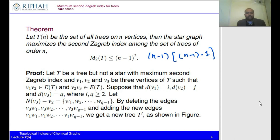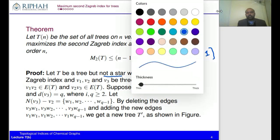The star graph gives the maximum second Zagreb index and we are going to prove this. Let T be a tree that is not a star, because if T is a star we have nothing to prove. So T is a tree and it is not a star.